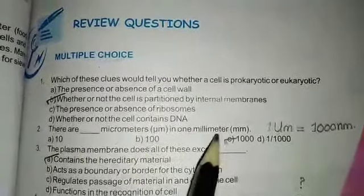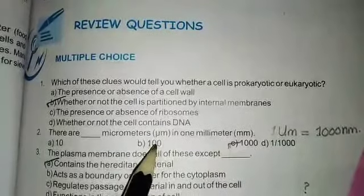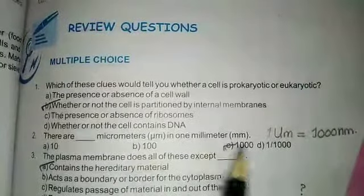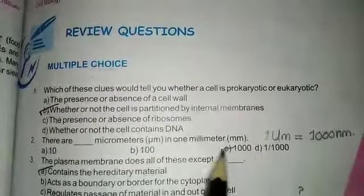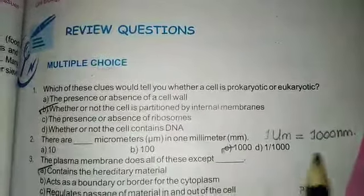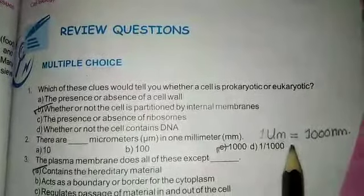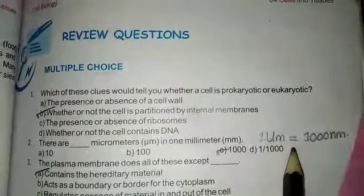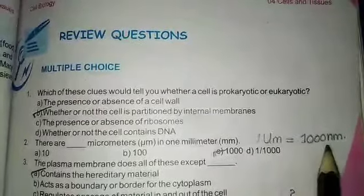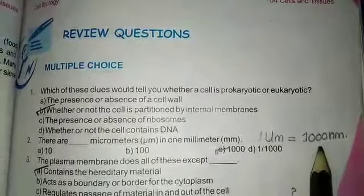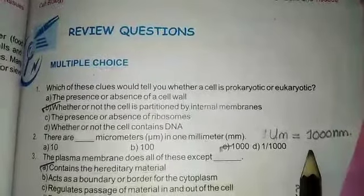Question number two: 1 millimeter equals 1000 micrometers. So 1 mm of the micrometer is 1000.